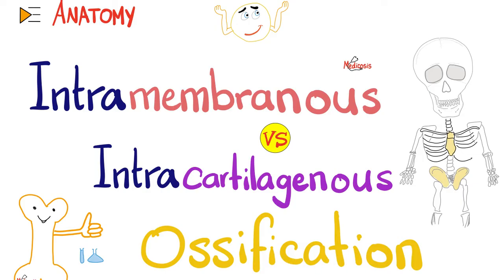Today, we have a very brief discussion about the difference between intramembranous and intracartilaginous ossification. Which one is more common? Intracartilaginous ossification is. Intramembranous only happens in a few bones, such as your clavicles and the bones in the vault of your skull. The rest of the body is intracartilaginous.